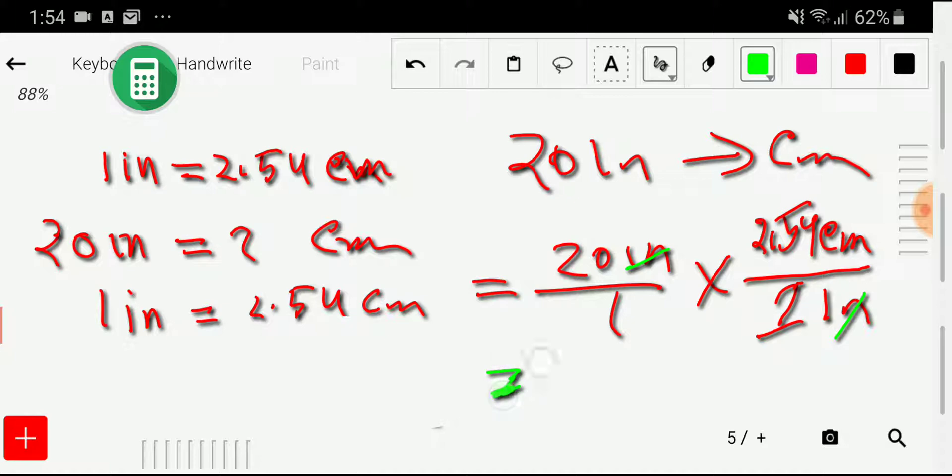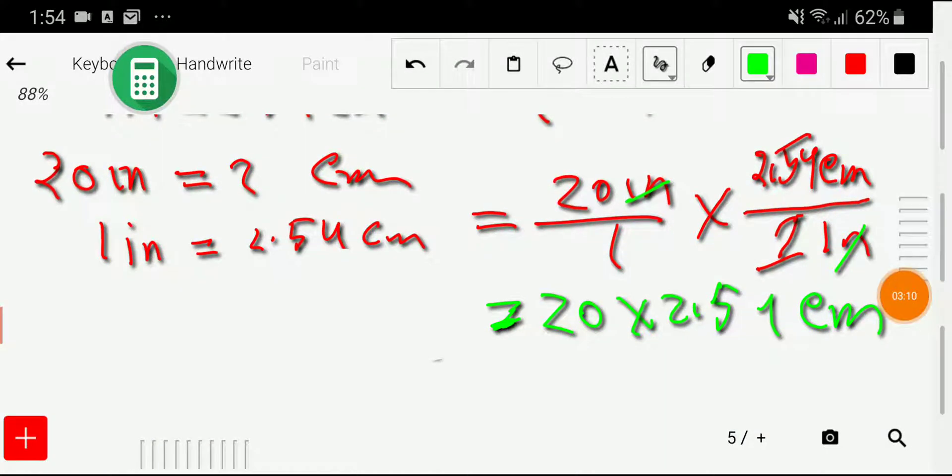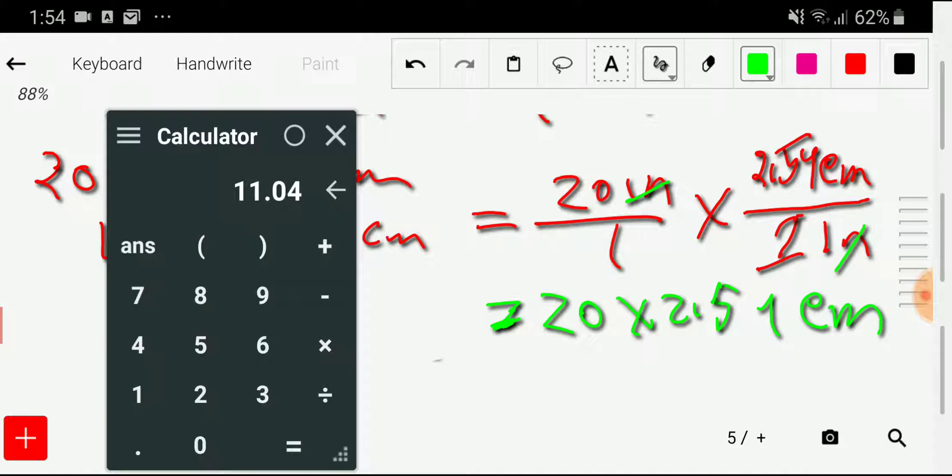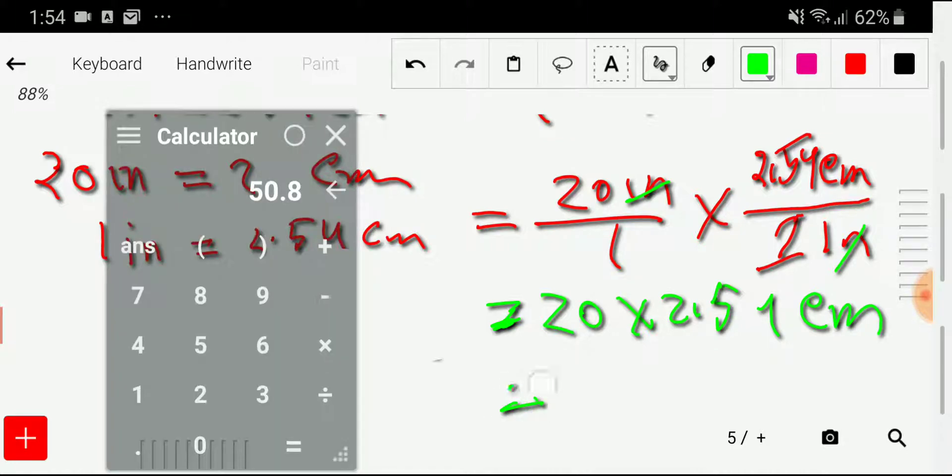Now we'll use our calculator. I will write 20 times 2.54. This gives me 50.8 centimeters.